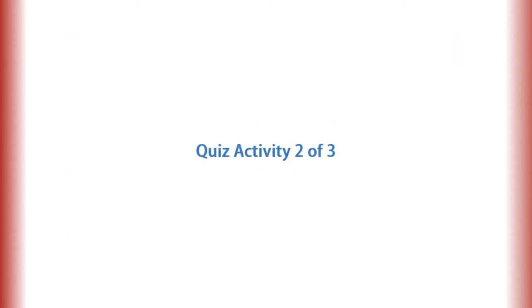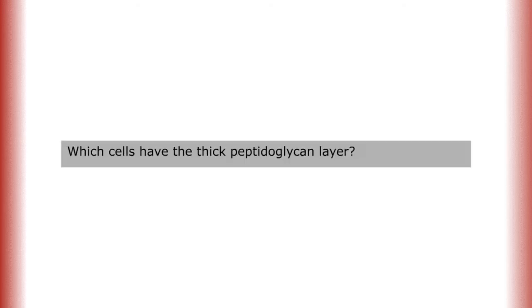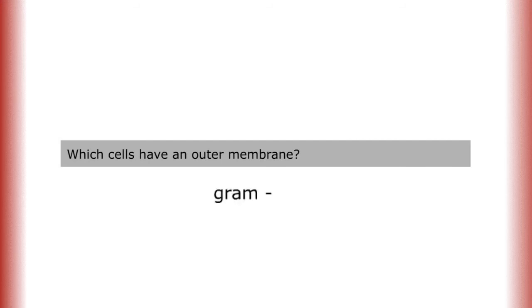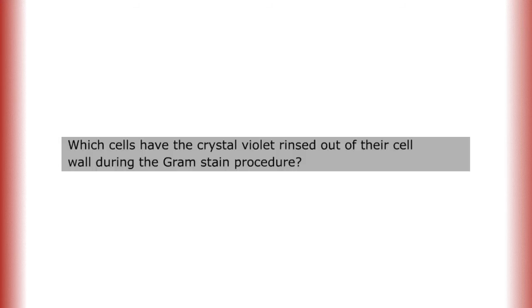Now in this set of questions, choose the correct term for the corresponding shape of each gram stain cell. Which cells have the thick peptidoglycan layer? Gram-positive. Which cells have an outer membrane? Gram-negative. And which cells have the crystal violet rinsed out of their cell wall during the gram stain procedure? Gram-negative.